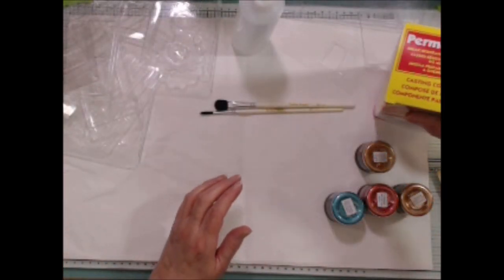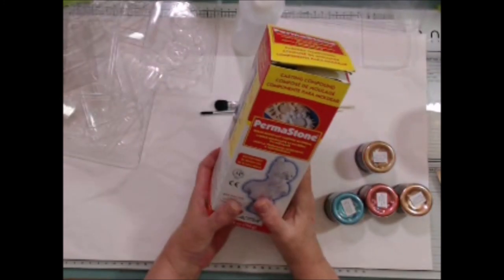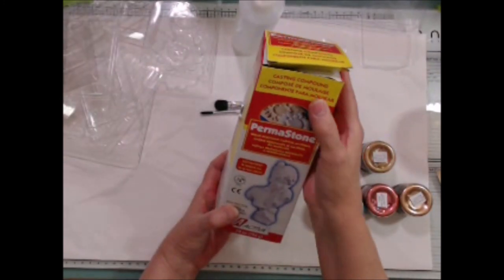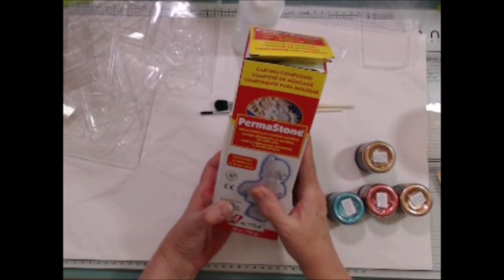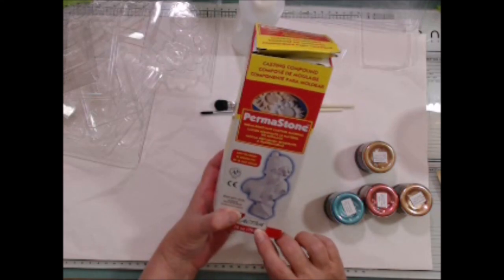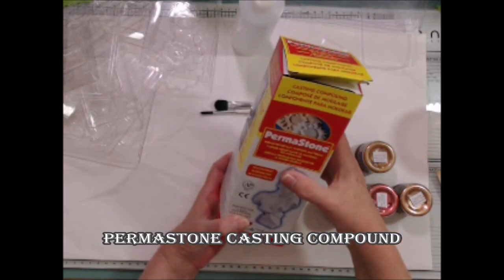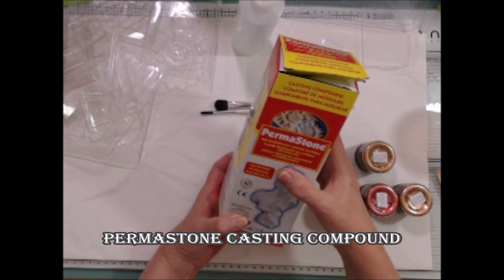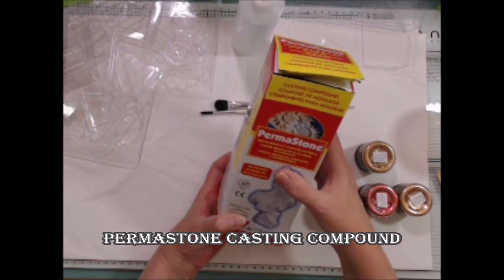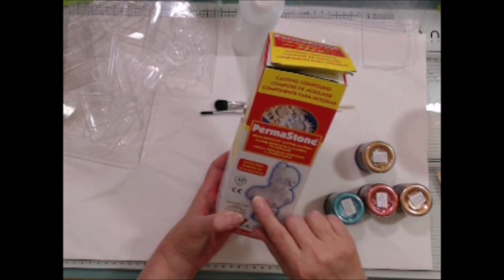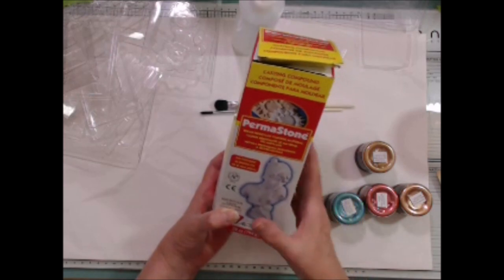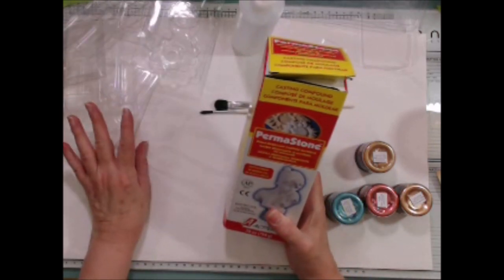Okay, I've got my permastone here, which is a casting compound made by Activa. It looks like baking powder maybe, but it's not. And it will make a very nice smooth molded piece when we're done.